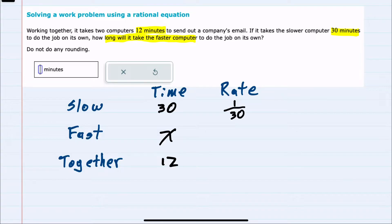The fast computer, I don't know how long, it's x, but it sends one batch of emails in x minutes. And together they can send one batch of emails in 12 minutes.